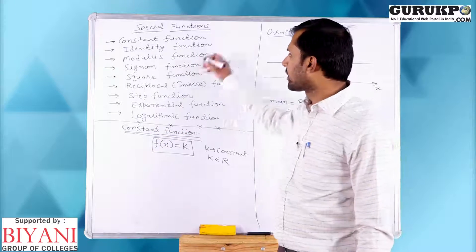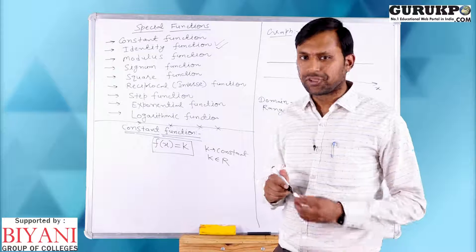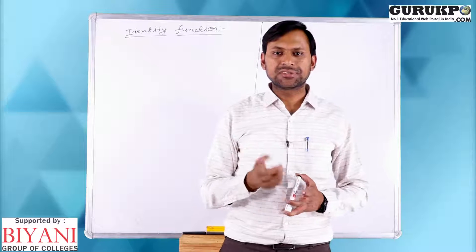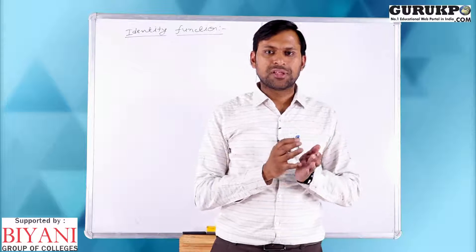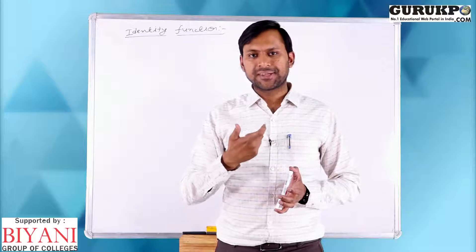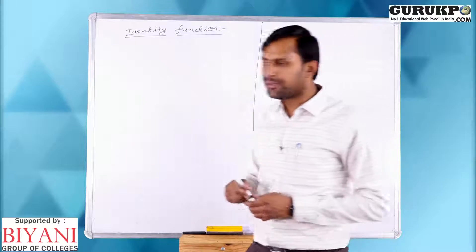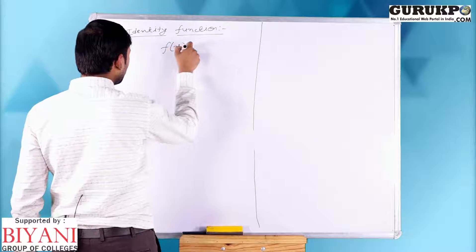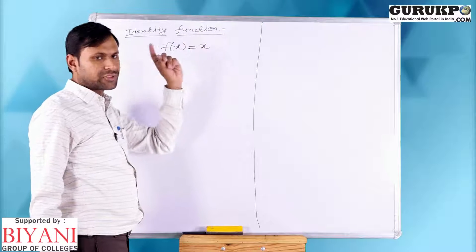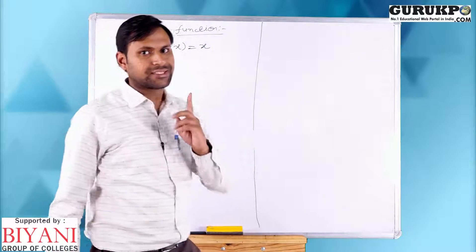The second function is the identity function. Identity function means if I place 1, I get 1; if I place 2, I get 2 — that is, if I place x, I get x again. That function is known as the identity function. It can be defined as f(x) = x. You place anything, you get the same thing. For example, place 4, get 4; place minus 4, get minus 4.